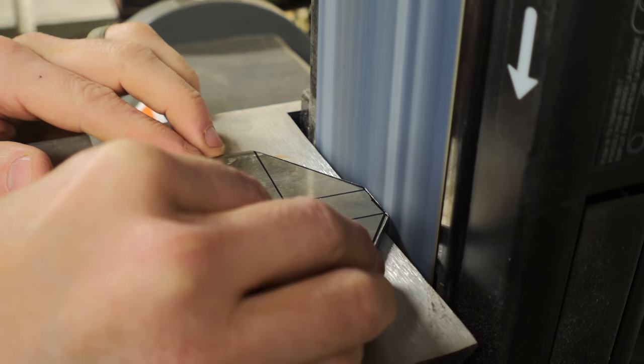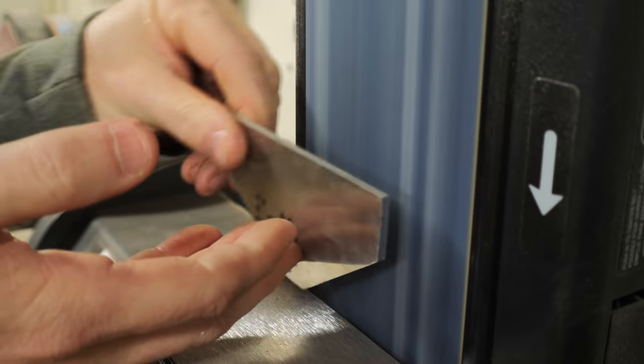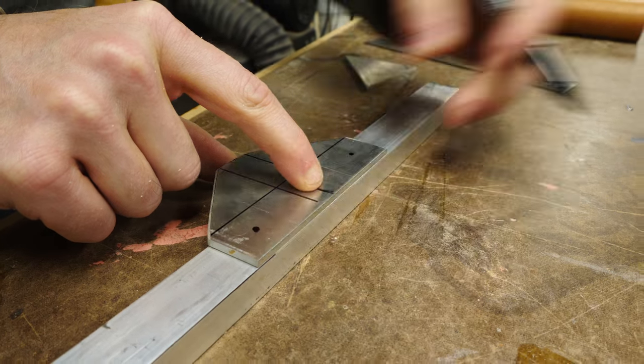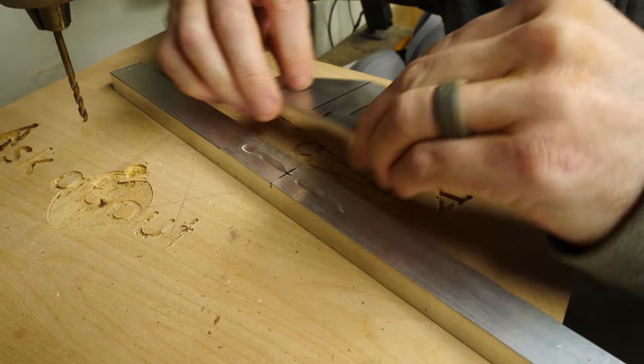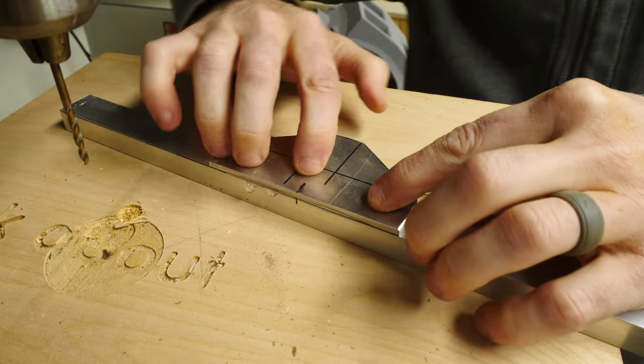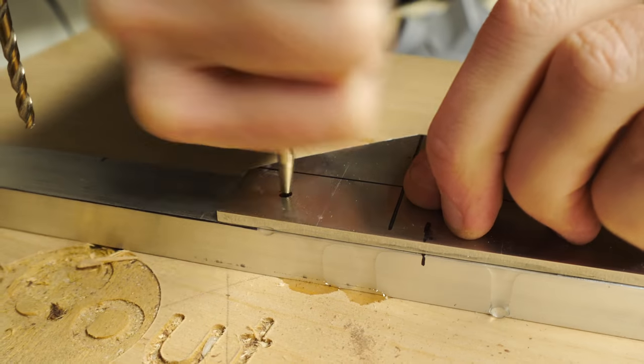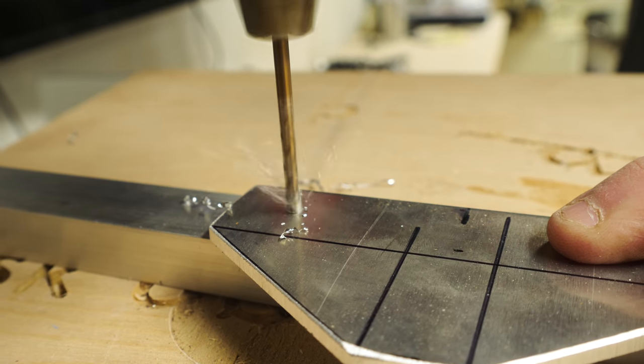Like I often do on the bandsaw, I didn't cut at the line. Instead, I cut next to it and then used a sander to creep up on it. I decided to drill holes in this through both pieces at the same time so I was sure that they would line up. I used some CA glue to hold the pieces together and then used a punch to start the hole and guide the drill bit. I drilled a hole through both of these at the same time.